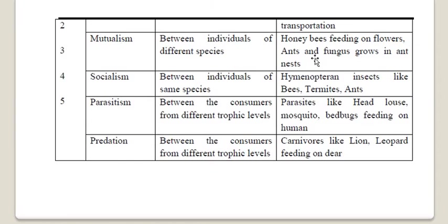Another example of mutualism: fungus grows in the ant nest. Fungus gets a ready-made floor and shelter with continuous supply for growth — so fungus is benefited. Ants grow and culture the fungus and also feed on it — so ants are also at benefit. These two members, fungus and ants, are equally benefited, making it mutualism.